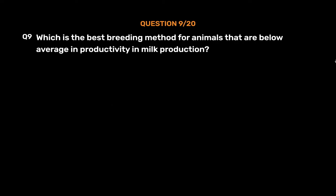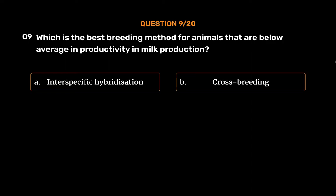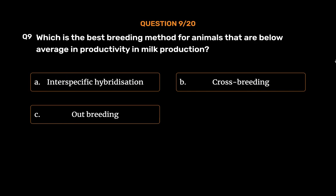Question 9: Which is the best breeding method for animals that are below average in productivity in milk production? Option A: Interspecific hybridization. Option B: Cross-breeding. Option C: Outbreeding. Option D: Outcrossing.